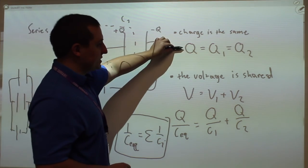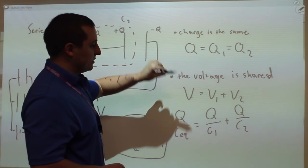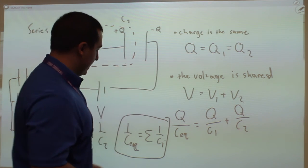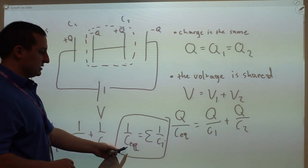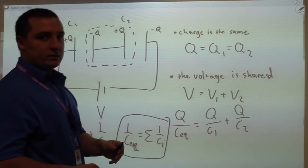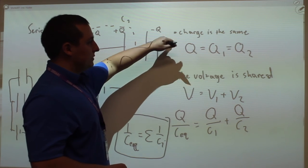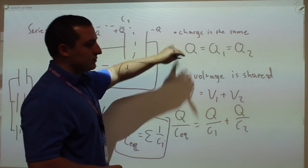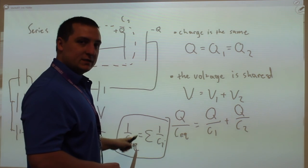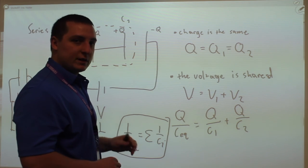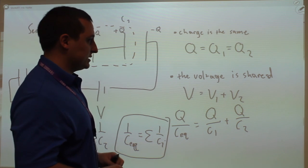So for series, the charge is the same on all the capacitors, the voltage is shared, and you get this equation for the sum of the capacitances. And for parallel, it's the opposite. The charge is shared, the voltages are the same, and the equivalent capacitance is the sum, the direct sum of all the individual capacitances.